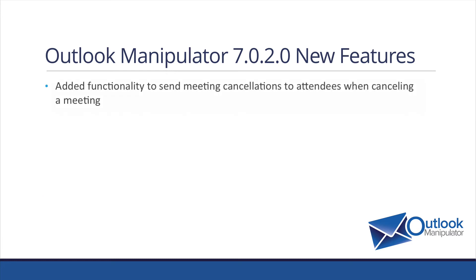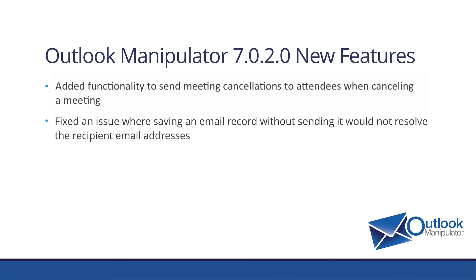Another feature we added is the ability to send meeting cancellations to attendees when canceling a meeting. We already had the ability to send an invitation-type event, but we did not have the ability to cancel that event on a subsequent request — now the plugin can do that. We also fixed an issue where saving an email record without sending it would not resolve the recipient email address.